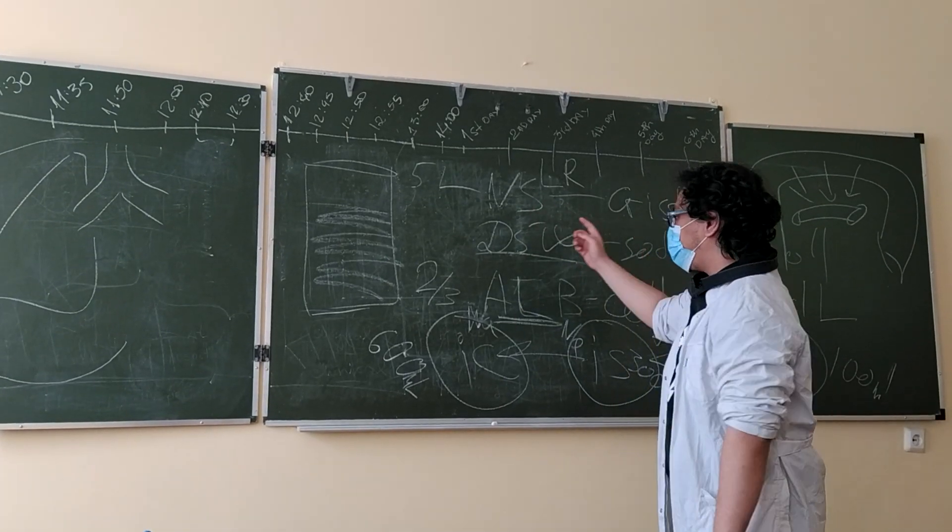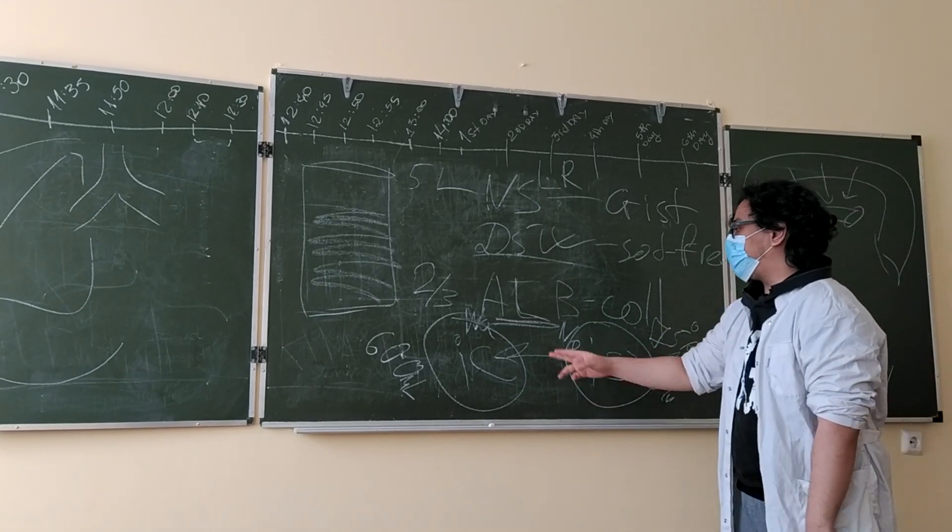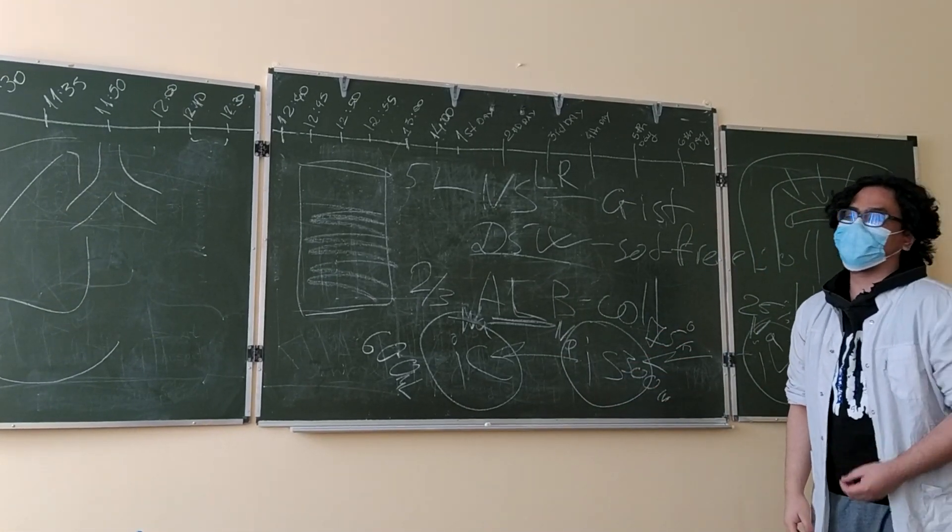Normal saline, which is a crystalloid solution. D5 in water, which is a sodium-free solution. And albumin, which is a colloidal solution because it contains protein.